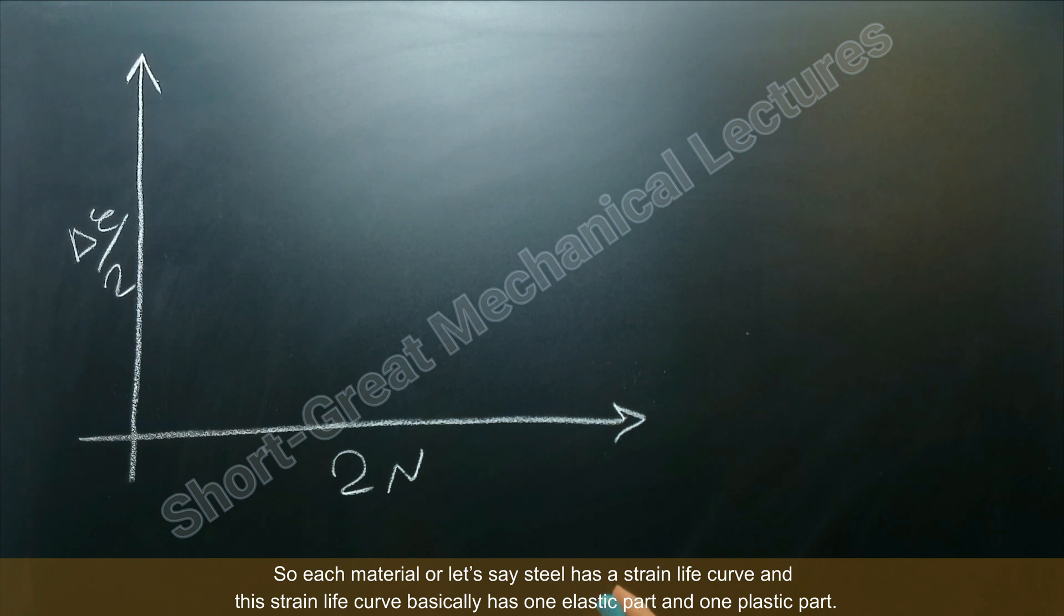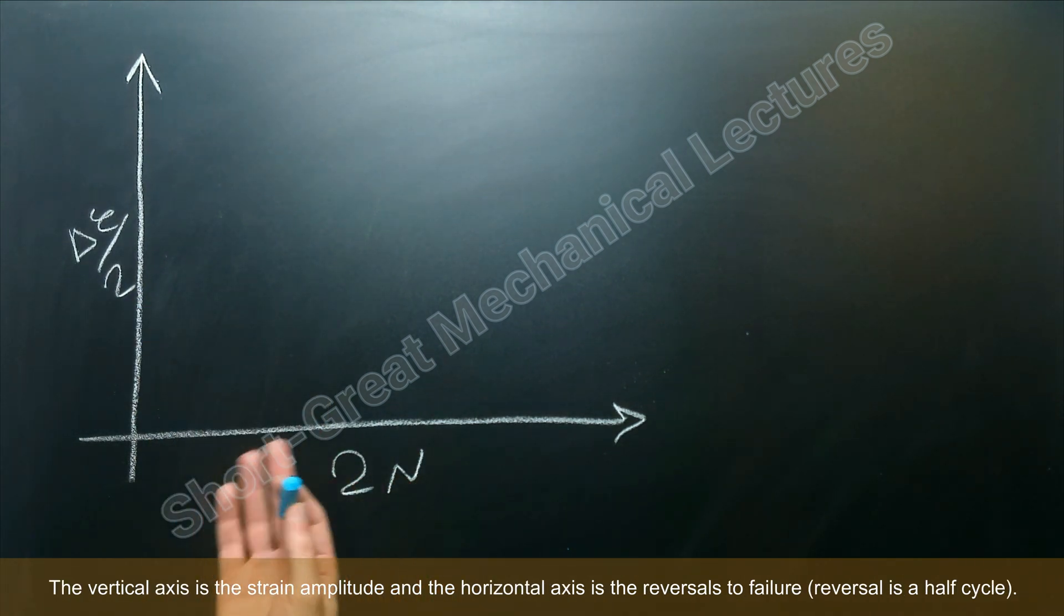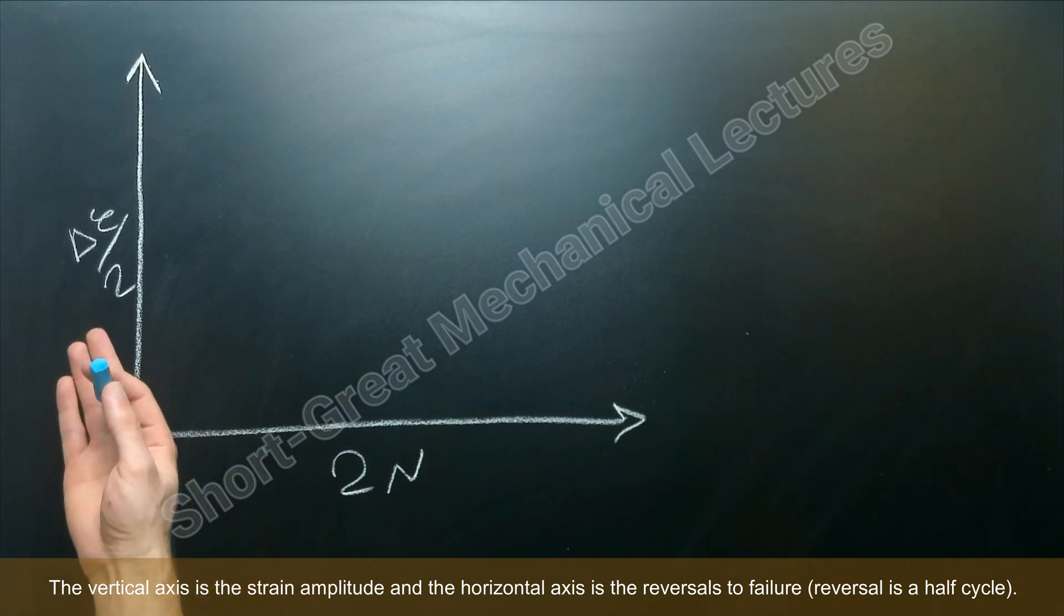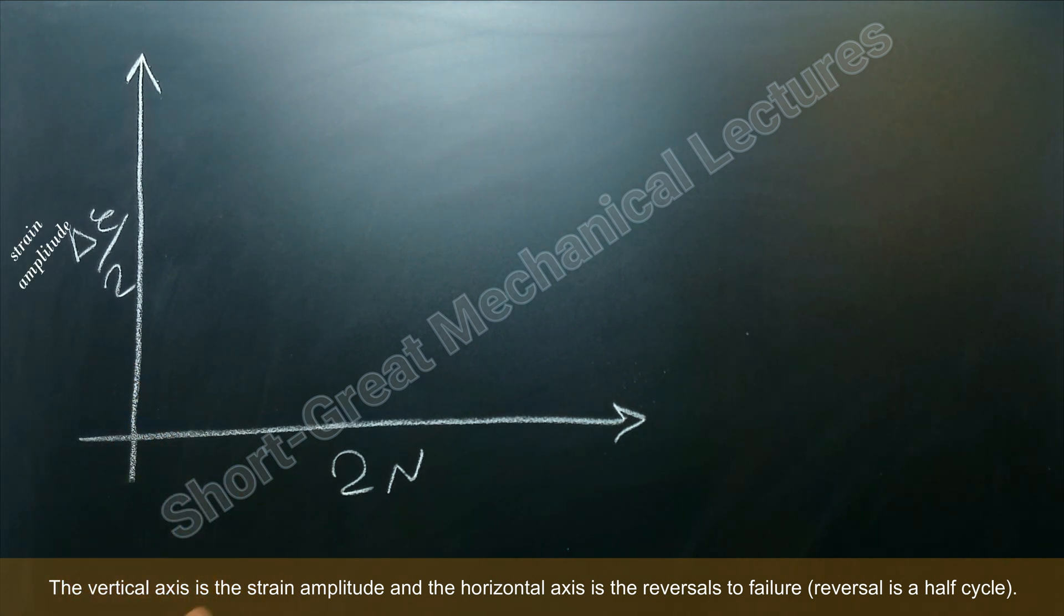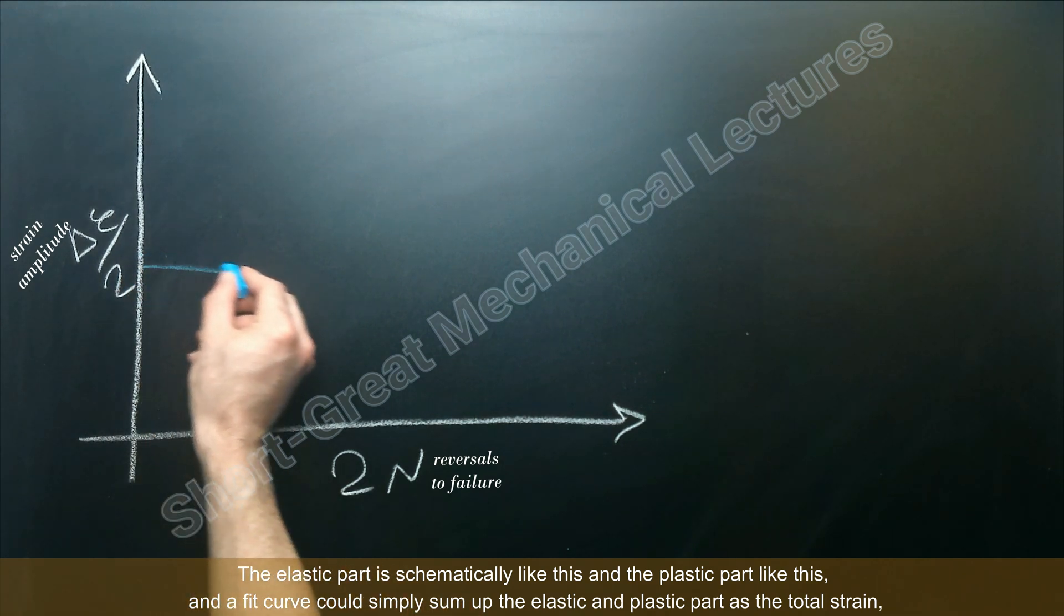So each material, or let's say steel, has a strain life curve. And this strain life curve basically has one elastic part and one plastic part. Okay, now I'm drawing schematically a stress life curve to illustrate these things. It's actually a log-log curve. The vertical axis is the strain amplitude and the horizontal axis is the reversals to failure. Reversal is a half cycle.